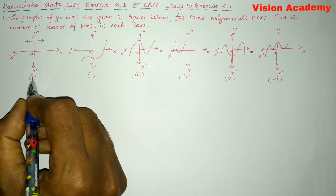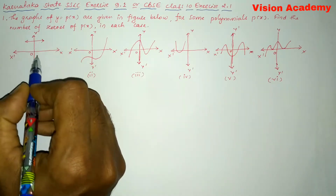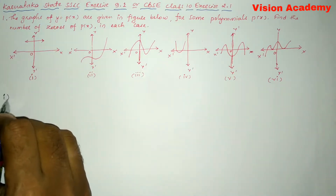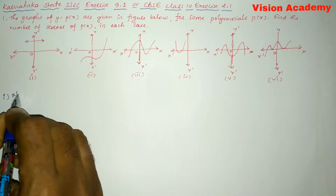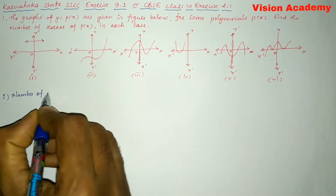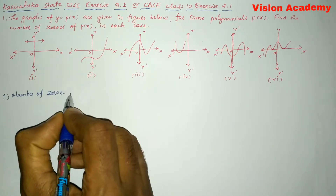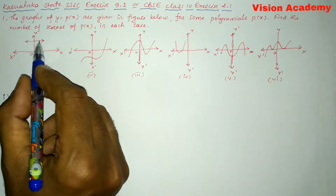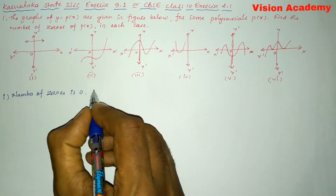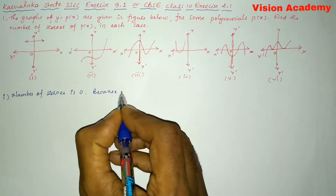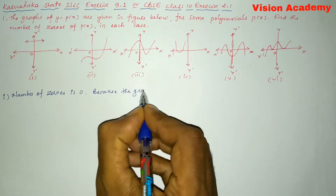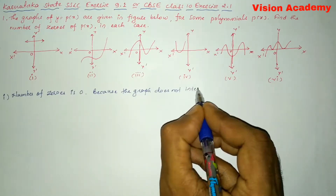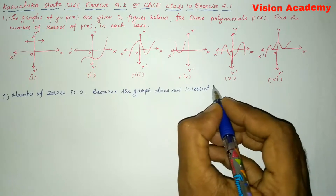Let us continue with Roman number 1. Here the graph is not at all intersecting the x-axis. So the number of zeros is 0, because the graph does not intersect the x-axis.